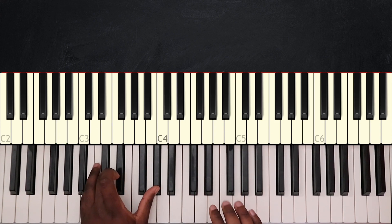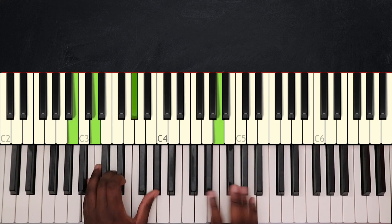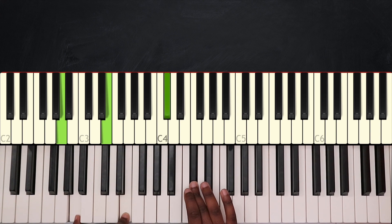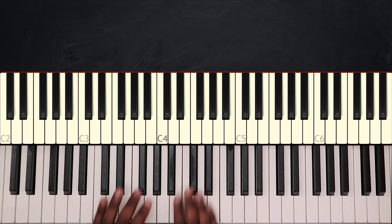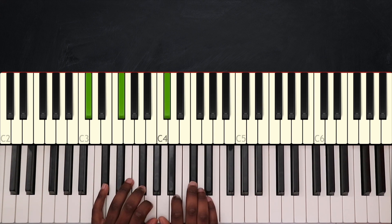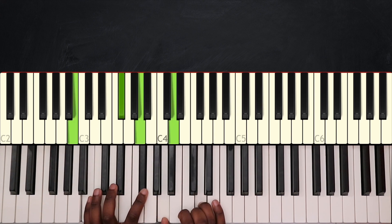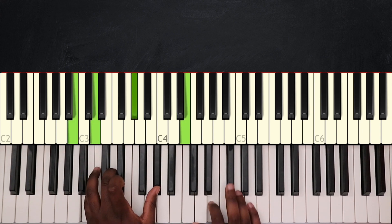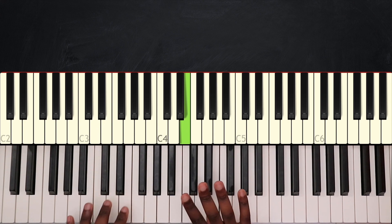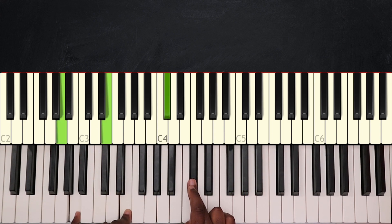Again. Okay so for this first part, F sharp minor going to B minor 7, then E7 going to A major.